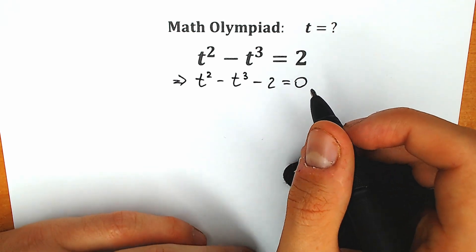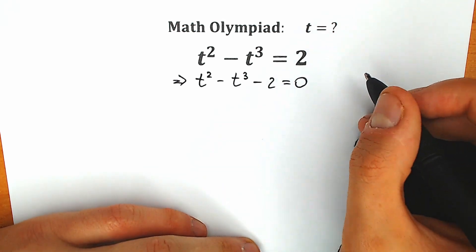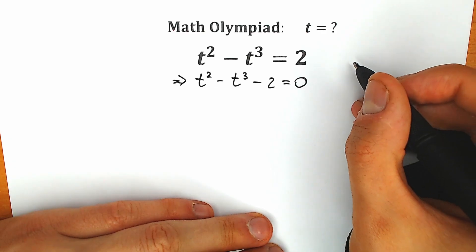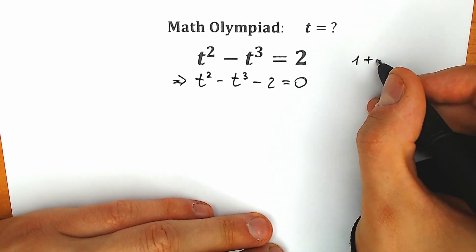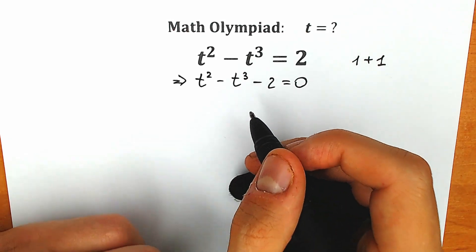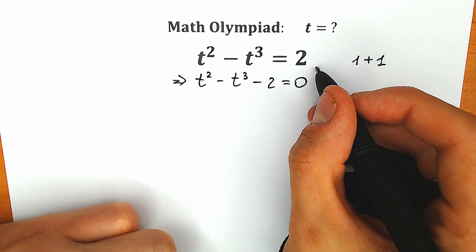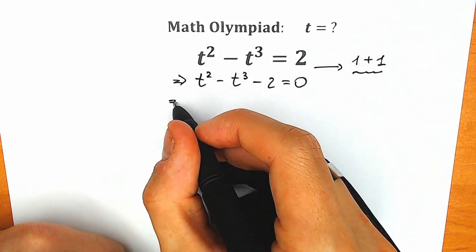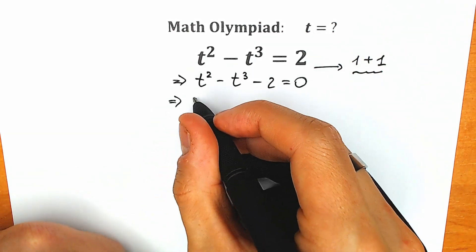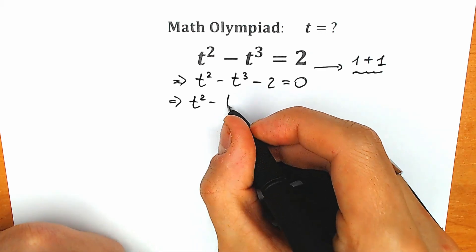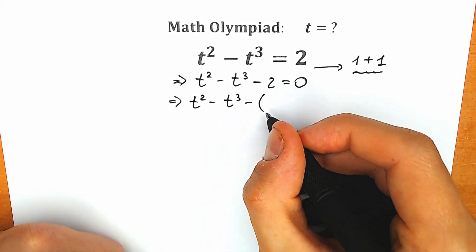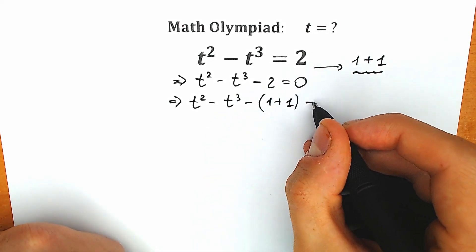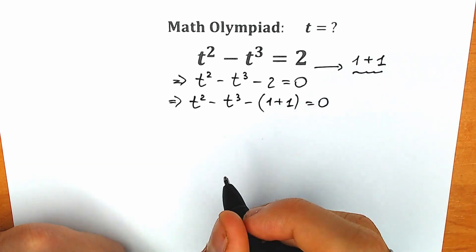What we're going to do next? We can express that 2 as 1 plus 1, and this is a great way to express this. In a few seconds I will explain you why this expression is really great for us. So we have t squared minus t cubed minus, and instead of 2 we write 1 plus 1.